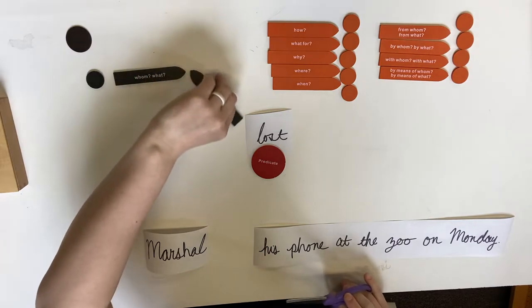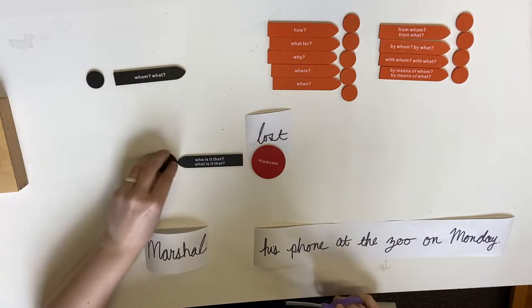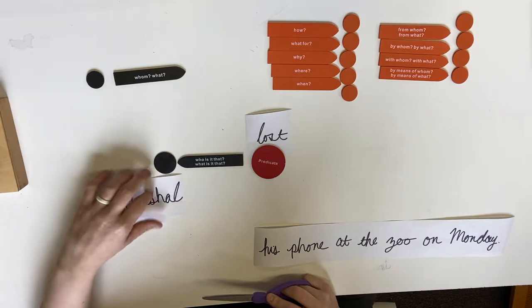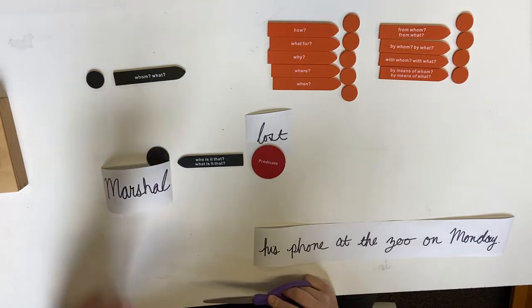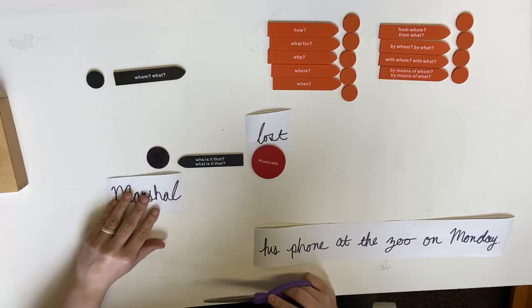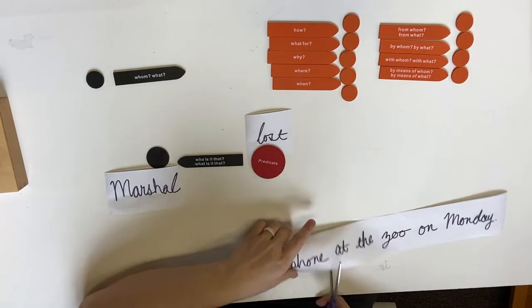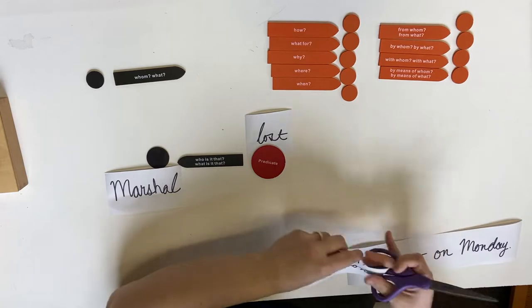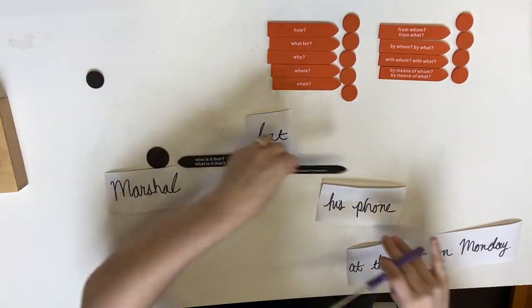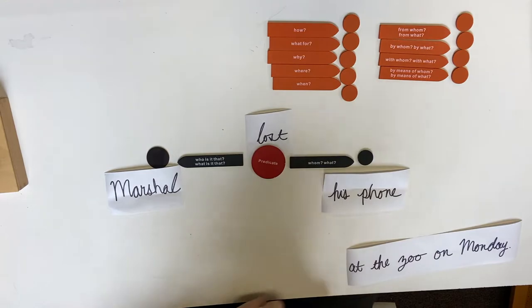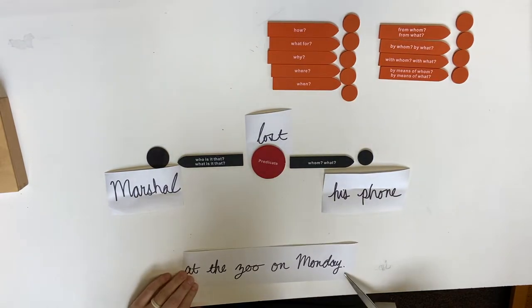And now we always ask this question next: who is it that lost? Marshall. Marshall lost what? His phone. Marshall lost his phone. Now we have 'at the zoo on Monday.'